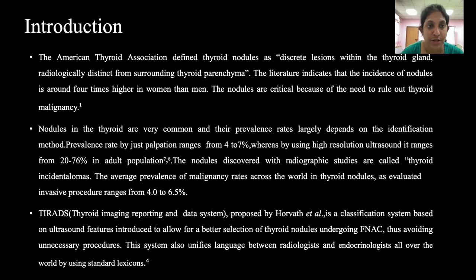The American Thyroid Association defined thyroid nodules as discrete lesions within the thyroid gland, radiologically distinct from the surrounding parenchyma. Literature shows that the incidence of thyroid nodules is 4 times higher in women than men. Prevalence by palpation is only 4–7%, whereas by ultrasound it is as high as 20–76% in an adult population. Nodules discovered in radiographic studies are called thyroid incidentalomas. The average prevalence of thyroid malignancy in thyroid nodules ranges from 4–6.5% worldwide.